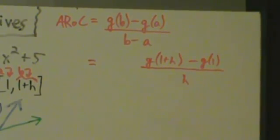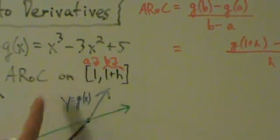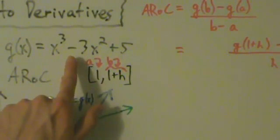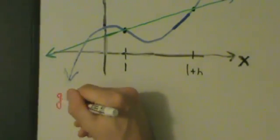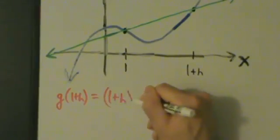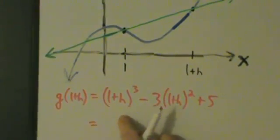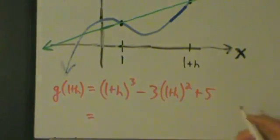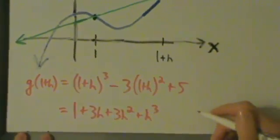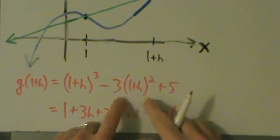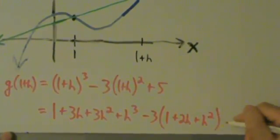Let's go ahead and continue. We have to figure out what g of 1 plus h and g of 1 are. This is where things get a little bit messy because we have x cubed. So g of x is x cubed minus 3x squared plus 5. So g of 1 plus h is going to be 1 plus h cubed minus 3 times 1 plus h squared plus 5. When we expand this, that's 1 plus h times 1 plus h times 1 plus h, giving us 1 plus 3h plus 3h squared plus h cubed. Then we have minus 3 times 1 plus h squared — we FOIL that to get 1 plus 2h plus h squared — and then plus 5.